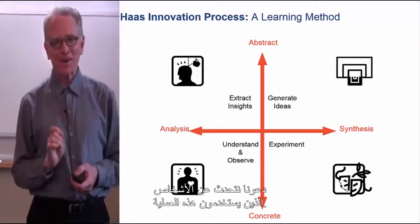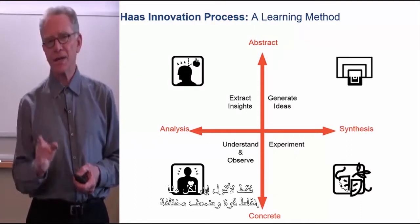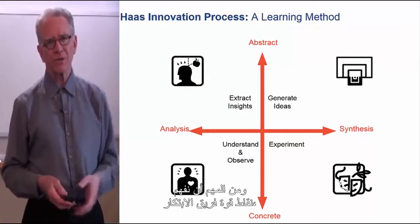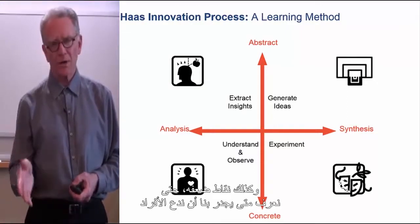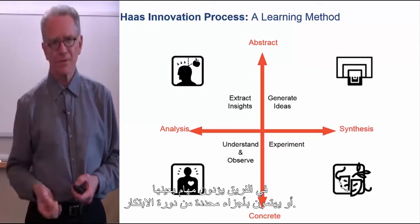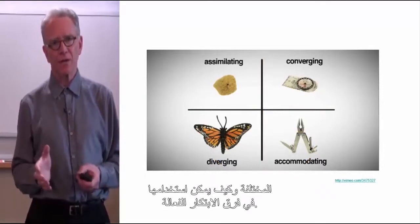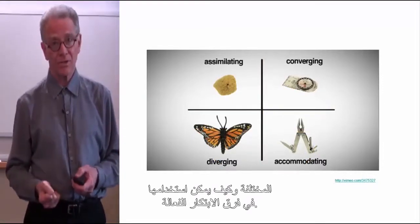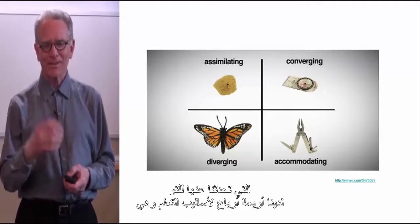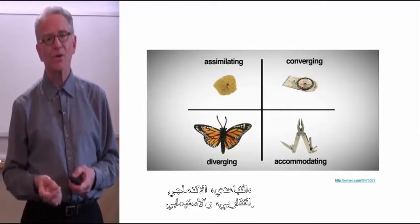Let's talk about the people that are using this process. I want to talk about this in terms of learning styles — all of us have different strengths and weaknesses. It's important to understand an innovation team's strengths as well as weaknesses, so we know when to have individuals perform certain functions, certain parts of the innovation cycle. In the four quadrants of the innovation process, we have four quadrants of learning styles: diverging, assimilating, converging, and accommodating.